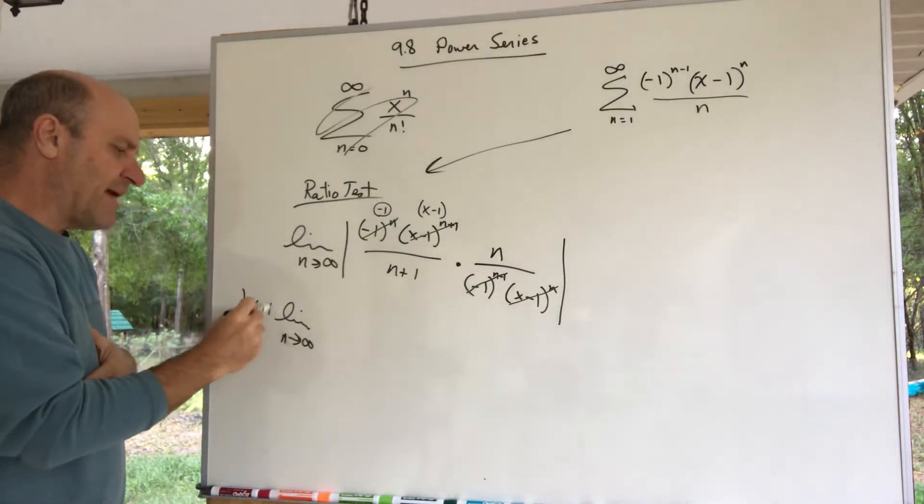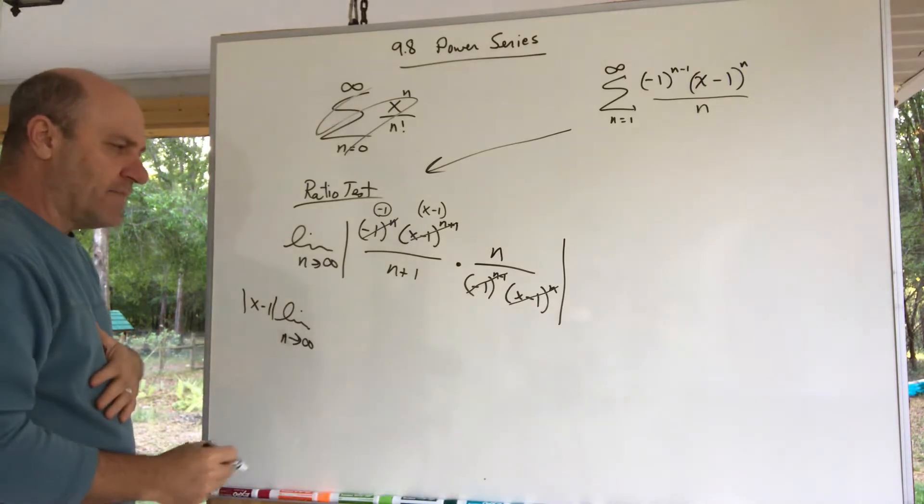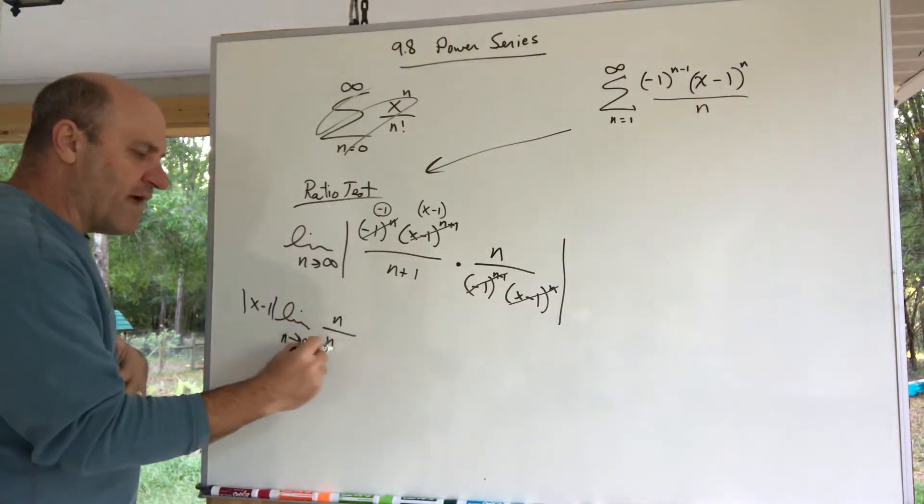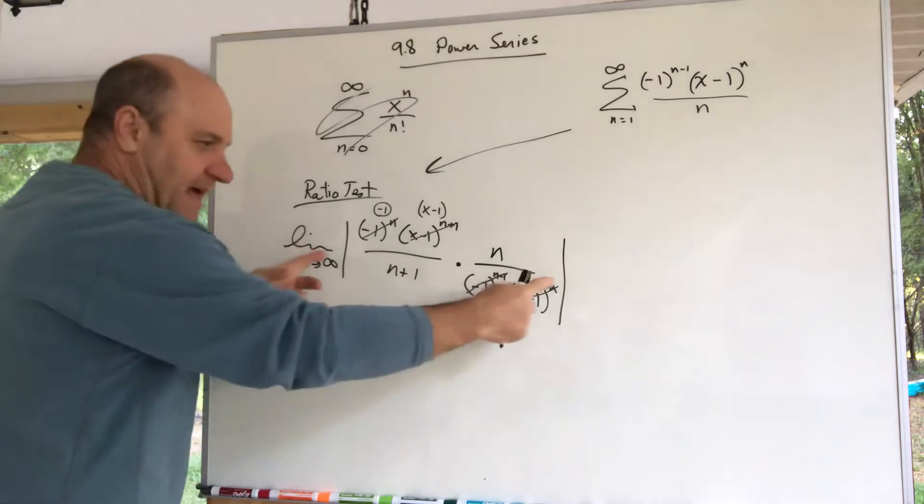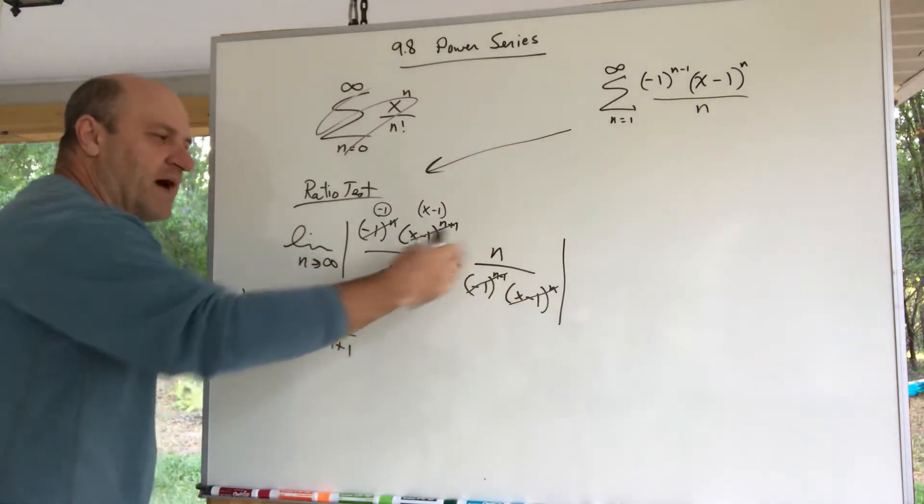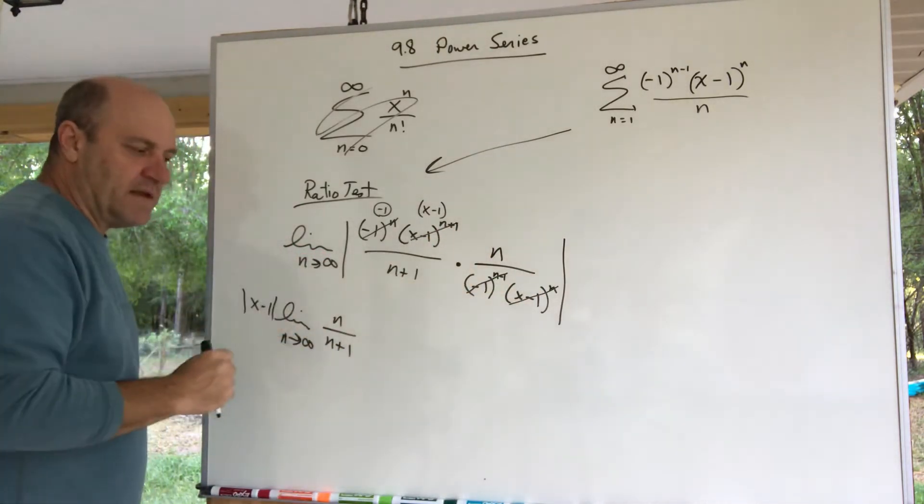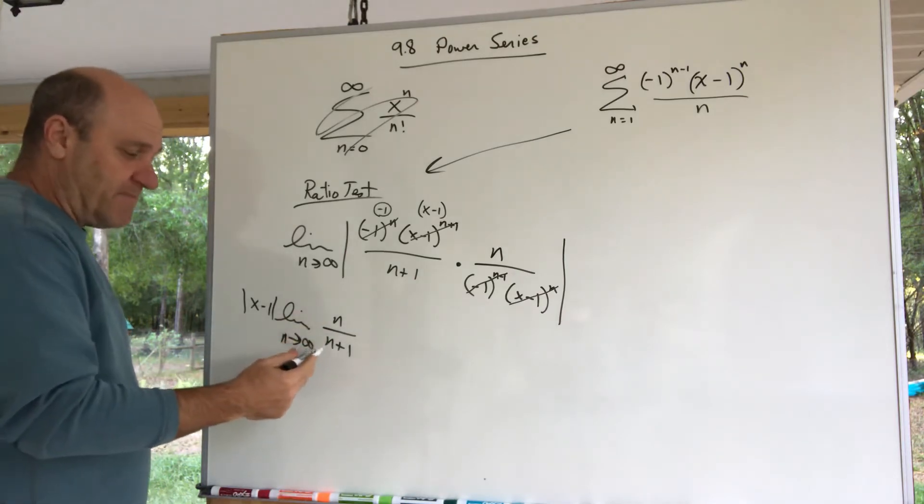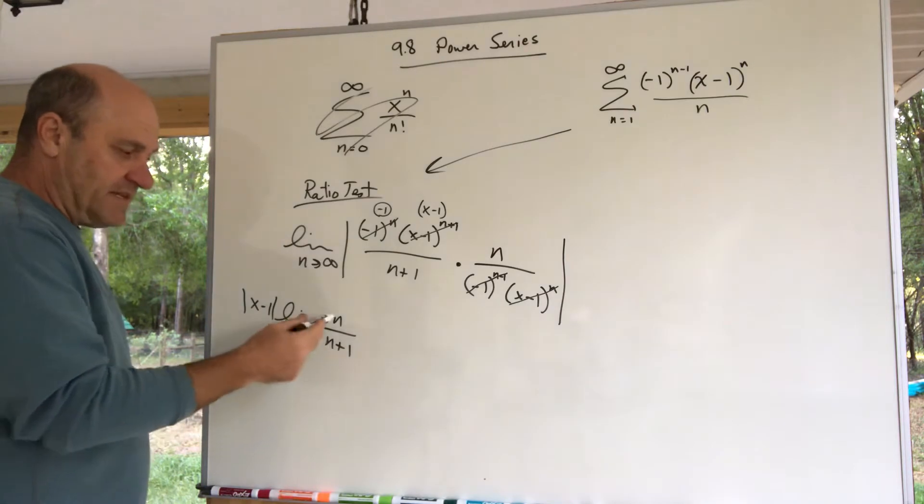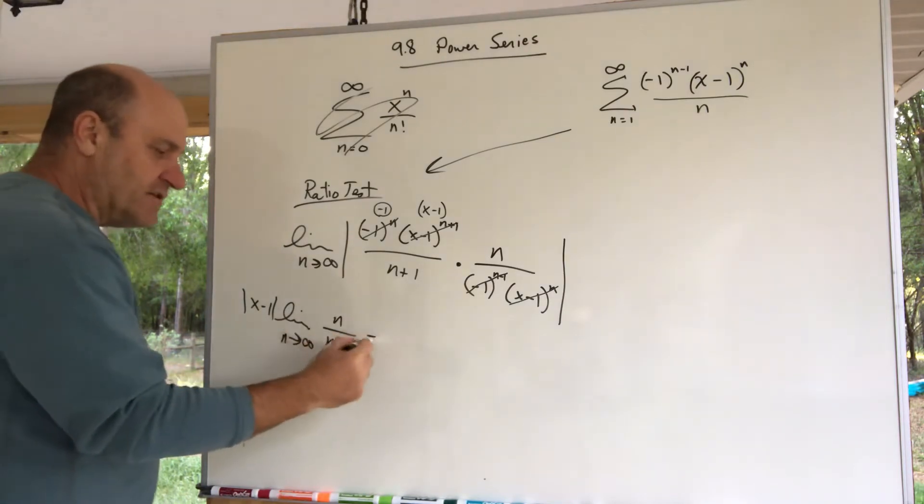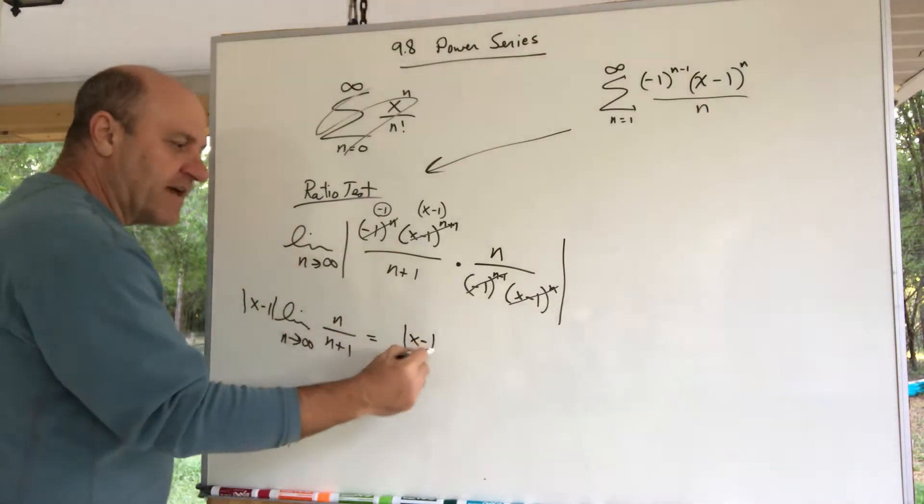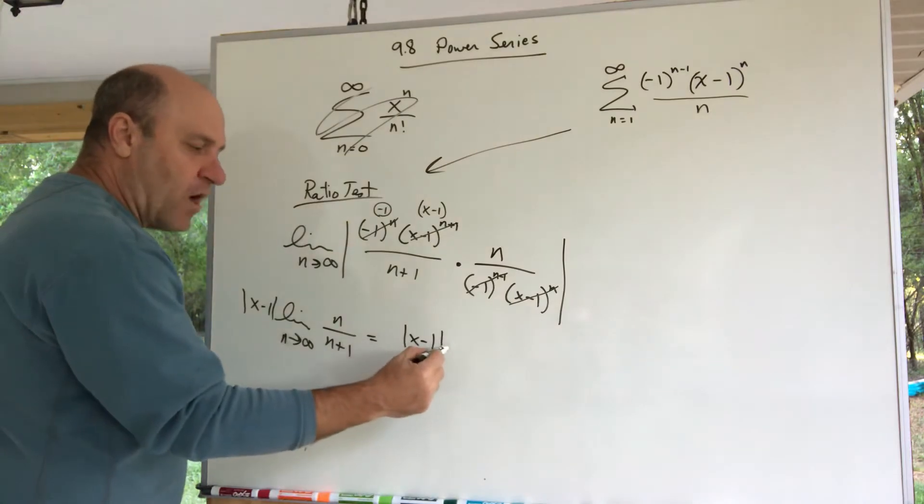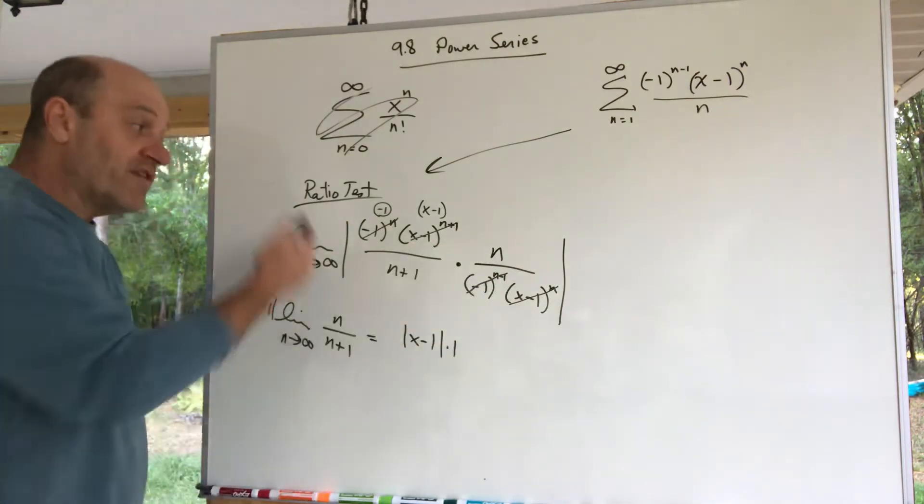So I'm pulling out the absolute value of x minus 1. I'm left with n over n plus 1. That was an absolute value, but those are positive numbers as we head toward infinity. And this is an easy limit—you guys know the answer to this limit. That's 1. It's infinity over infinity, same, it's 1. And so the answer now is this absolute value of x minus 1 times 1. Again, the conclusion of a ratio test is this converges when it's less than 1.